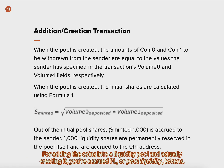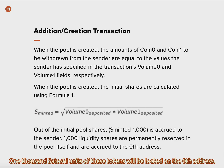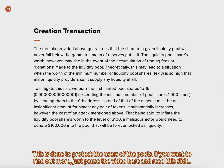For adding the coins into a liquidity pool and actually creating it, you accrue PL, or pool liquidity, tokens. The number of these tokens to be accrued upon creation is calculated using the formula you can see here. 1,000 Satoshi units of these tokens will be locked on the 0th address. This is done to protect the users of the pools. If you want to find out more, just pause the video here and read this slide.